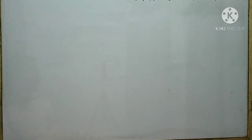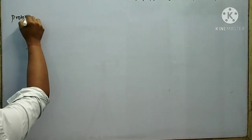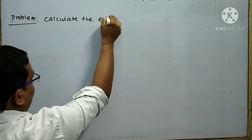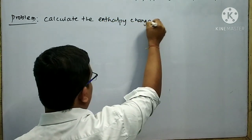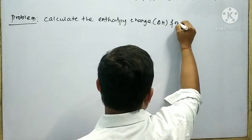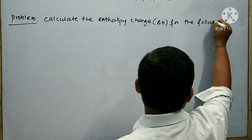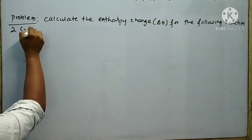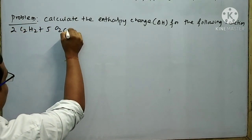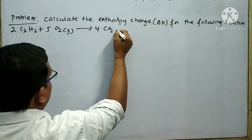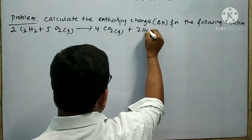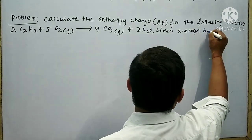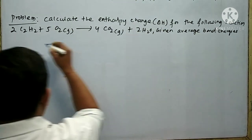Let me explain a problem related to bond energy. Calculate the enthalpy change ΔH for the following reaction: 2C₂H₂ + 5O₂ → 4CO₂ + 2H₂O, given the average bond energies of various bonds.